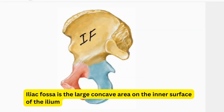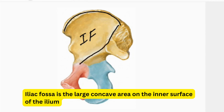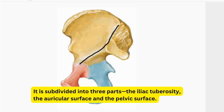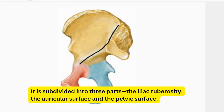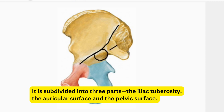The iliac fossa is a large concave depression on the inner surface of the ilium. It is bounded above by the iliac crest, behind by the medial border, and in front by the anterior border. The area behind the medial border is called the sacropelvic surface, which is subdivided into three parts: the iliac tuberosity, which is the upper large and rough part; the auricular surface, which lies below the iliac tuberosity and articulates with the sacrum to form the sacroiliac joint; and the pelvic surface, which lies below the auricular surface.